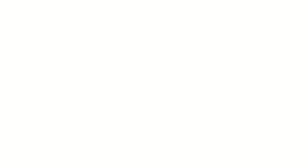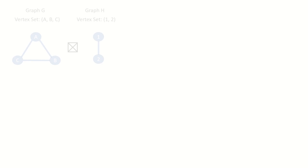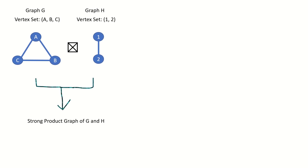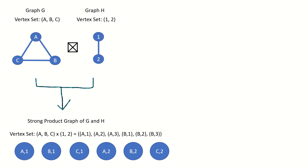The strong product of graphs is a graph operation that takes two graphs as its input and outputs a new graph. The strong product of two graphs G and H is itself a graph, and it has vertex set equal to the Cartesian product of the vertex sets of graphs G and H. Each vertex corresponds to a pair of vertices, where the left entry is a vertex in graph G and the right entry is a vertex in graph H.